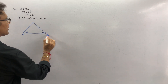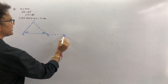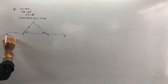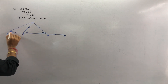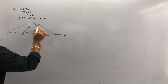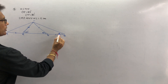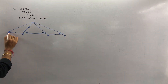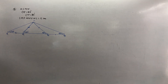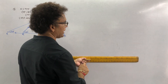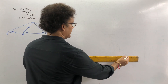What we will do is extend the sides and label the construction points as A and B. Since angle N is 80°, its half is 40°. Since angle M is 60°, its half is 30°. Draw line AB of 11 cm as the base.